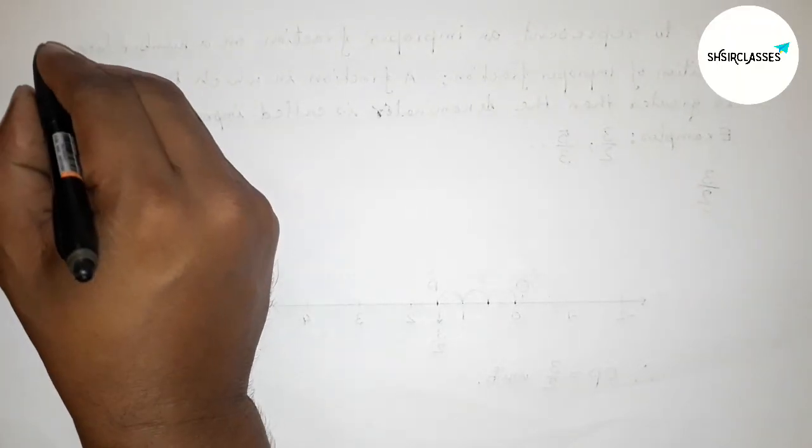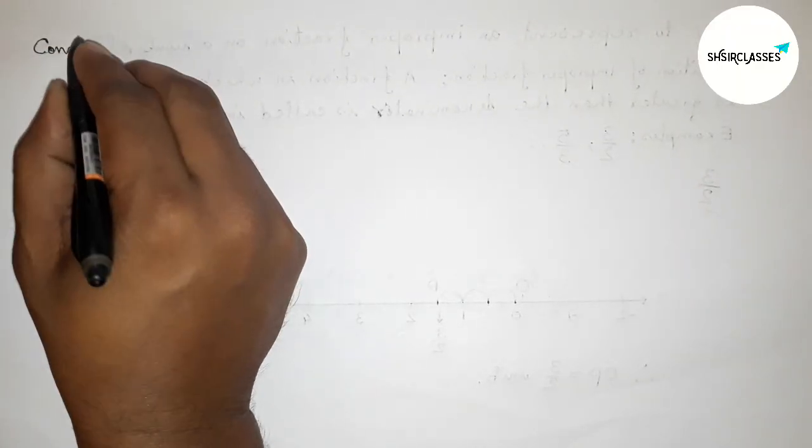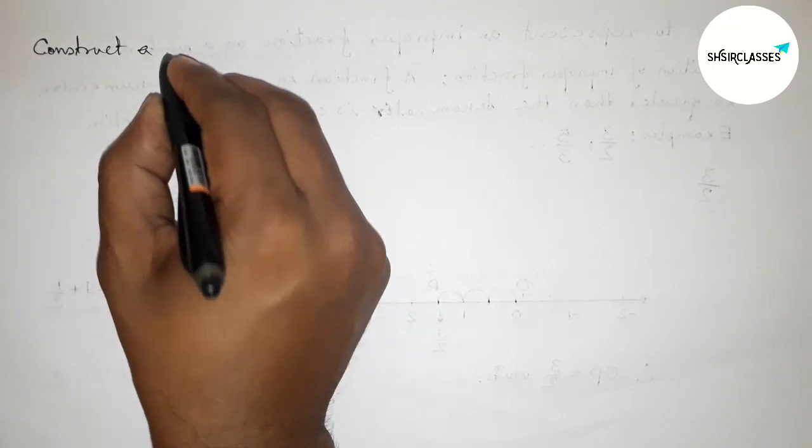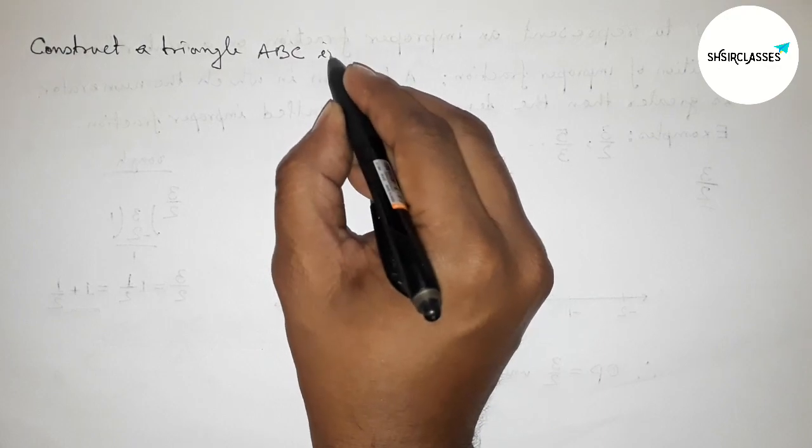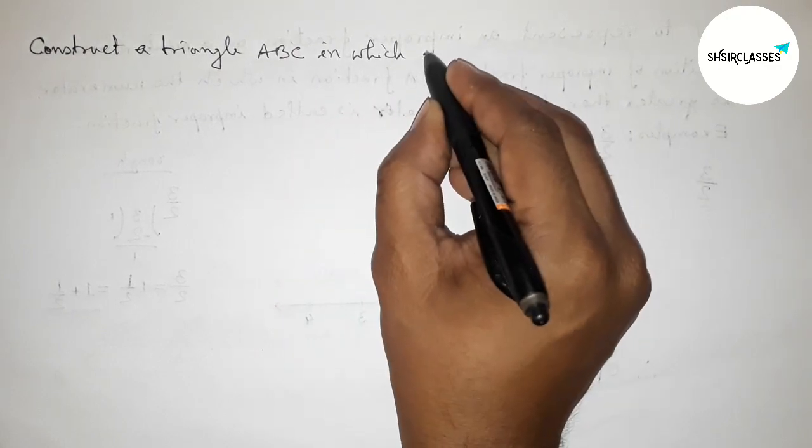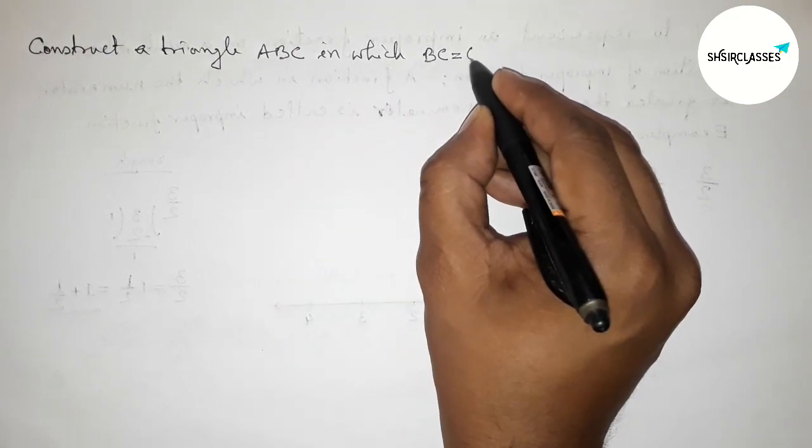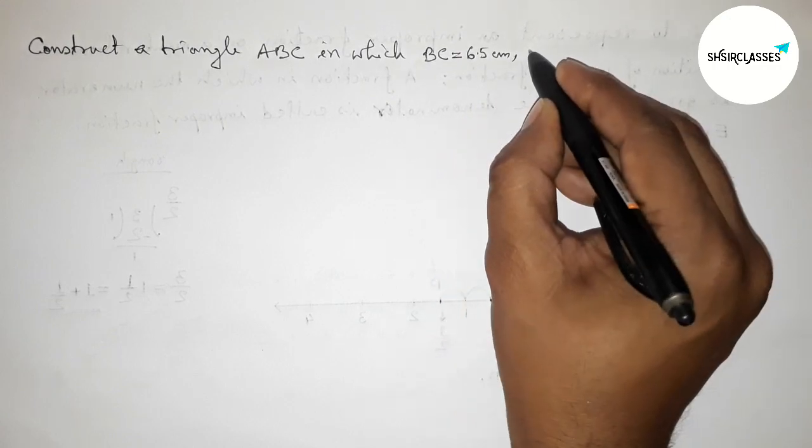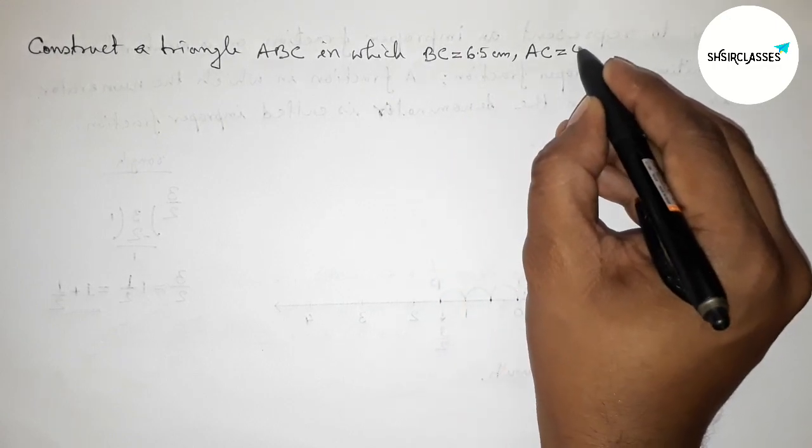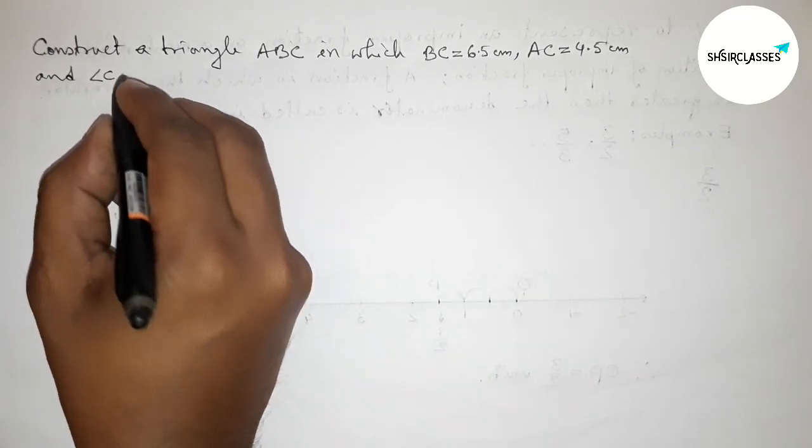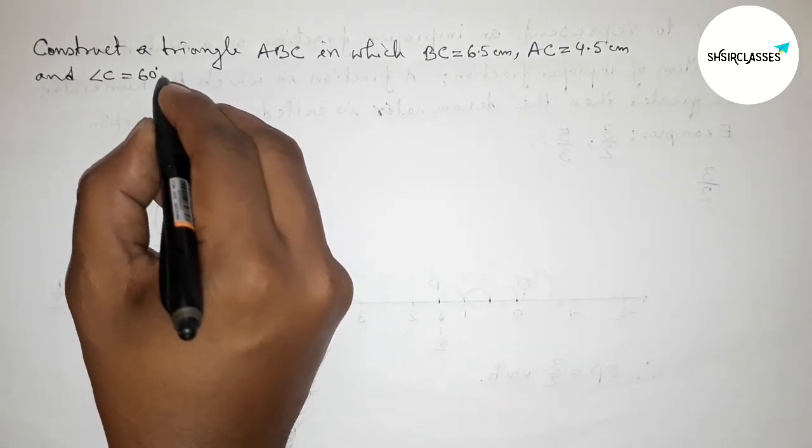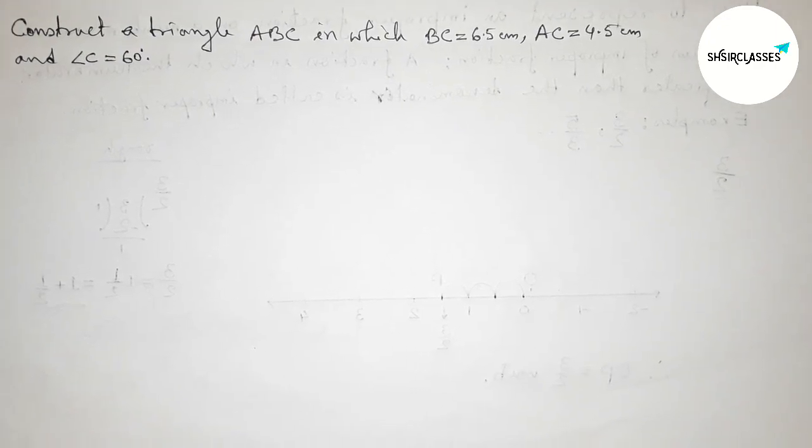Hi everyone, welcome to SI Share Classes. Today in this video we have to construct a triangle ABC in which BC equals 6.5 centimeters, AC equals 4.5 centimeters, and angle C equals 60 degrees. Please watch the video till the end. Let's start the video.